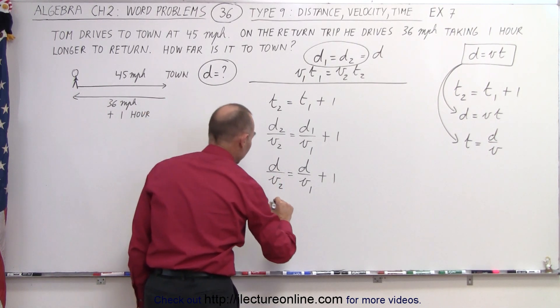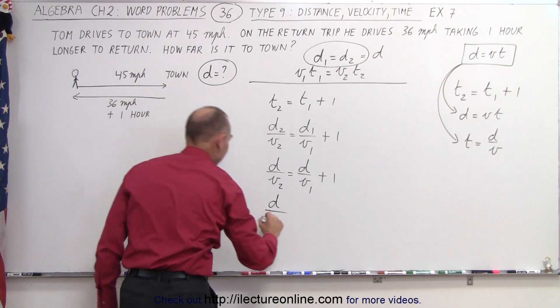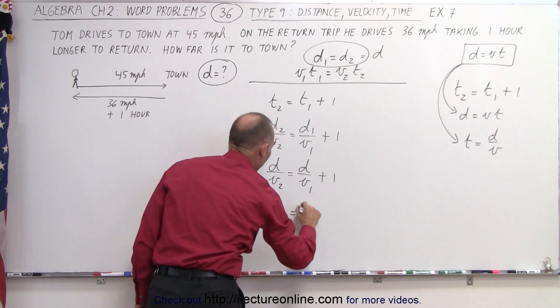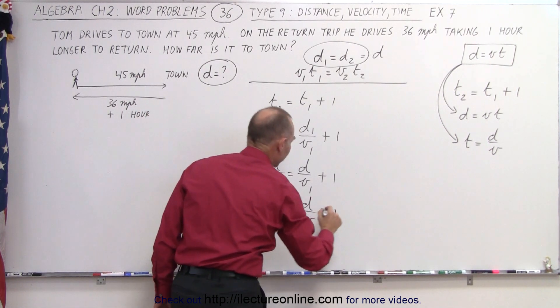Let's plug those values in. So we get D over V₂, which is the velocity going back, that's 36, equals D over the velocity going to town, which is 45, plus 1.